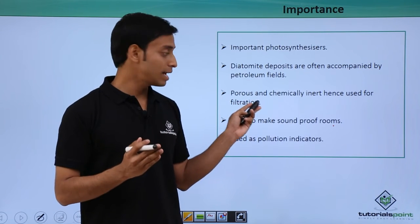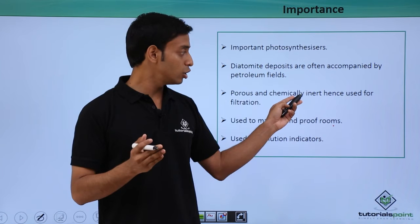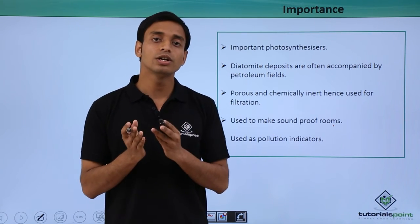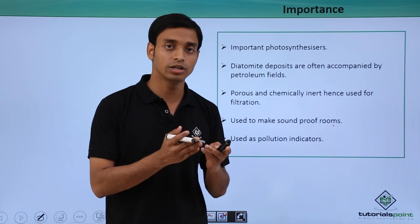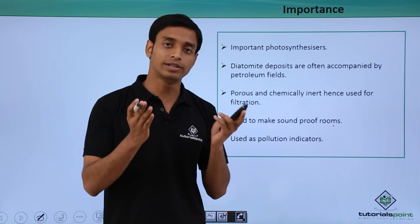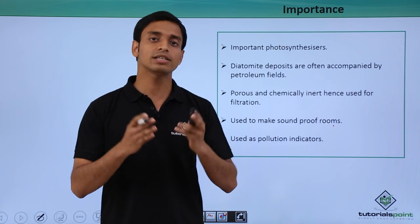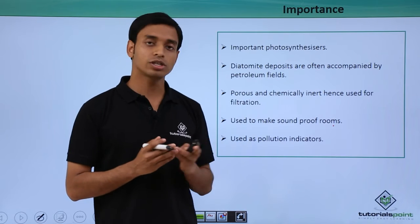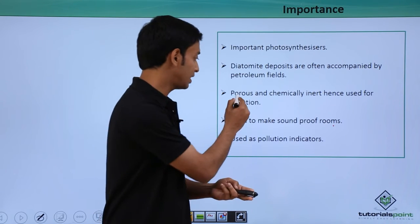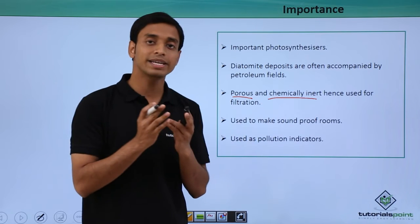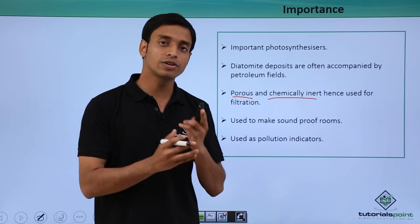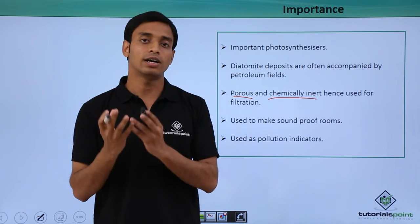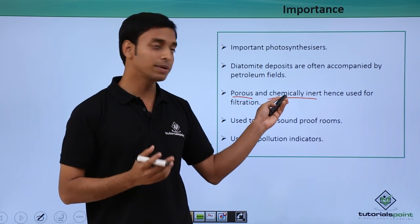They are porous and chemically inert. This property is used for filtration. For example, we use this property to filter sugar and alcohol, and various other substances. In filtration, we use diatomite earth because they are porous and chemically inert. Chemically inert means they will not react with the things we are trying to filter through this diatomite earth.